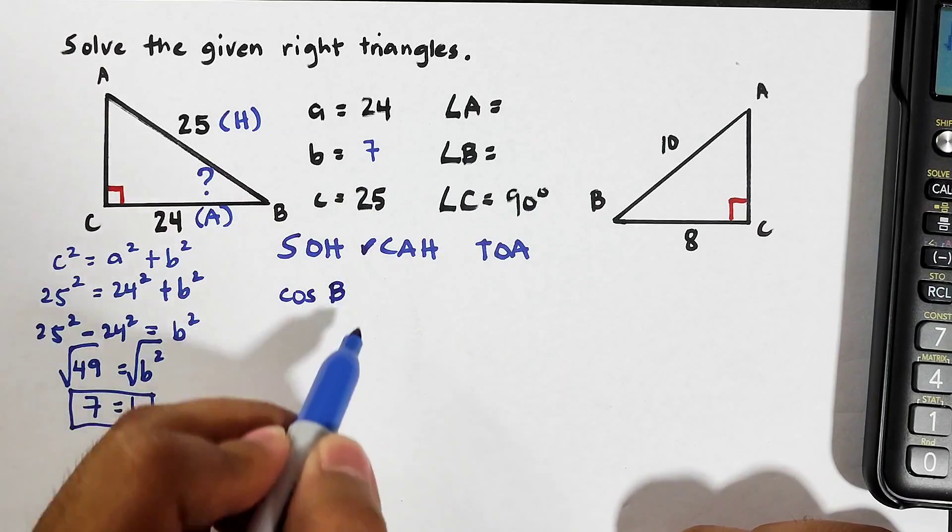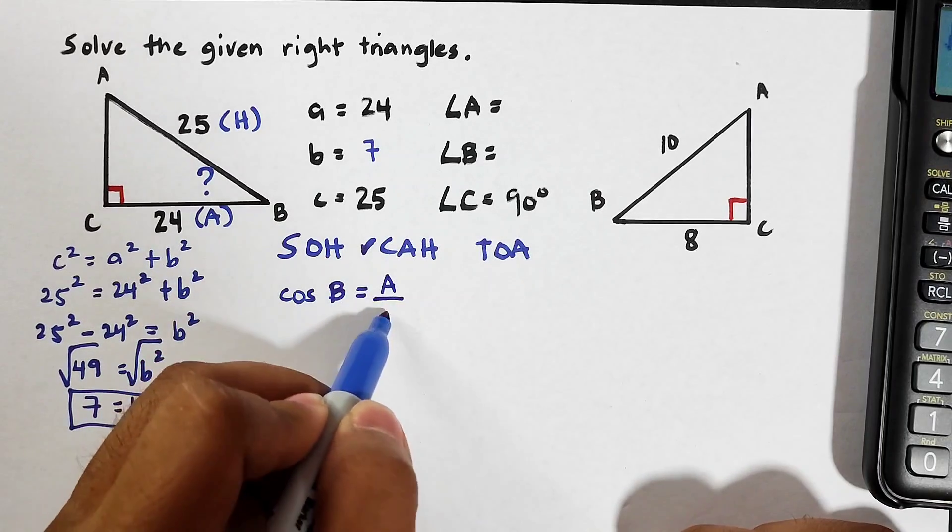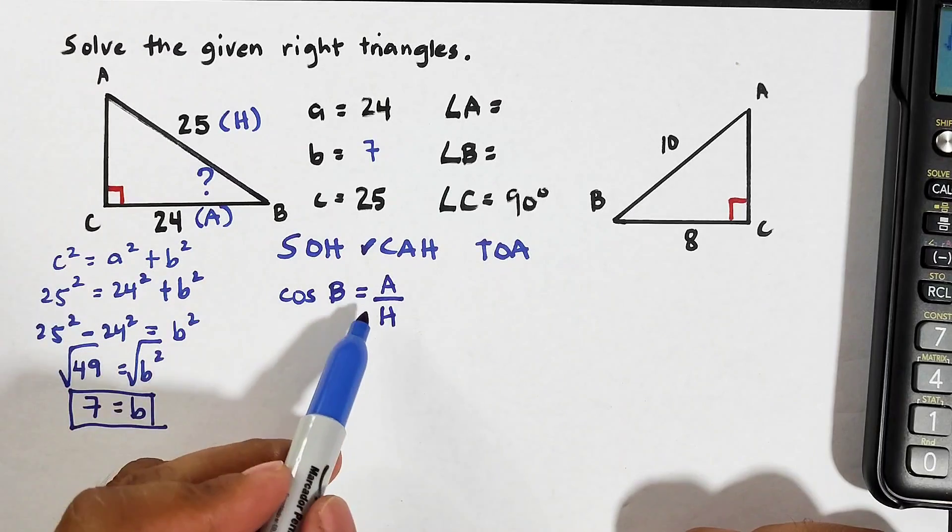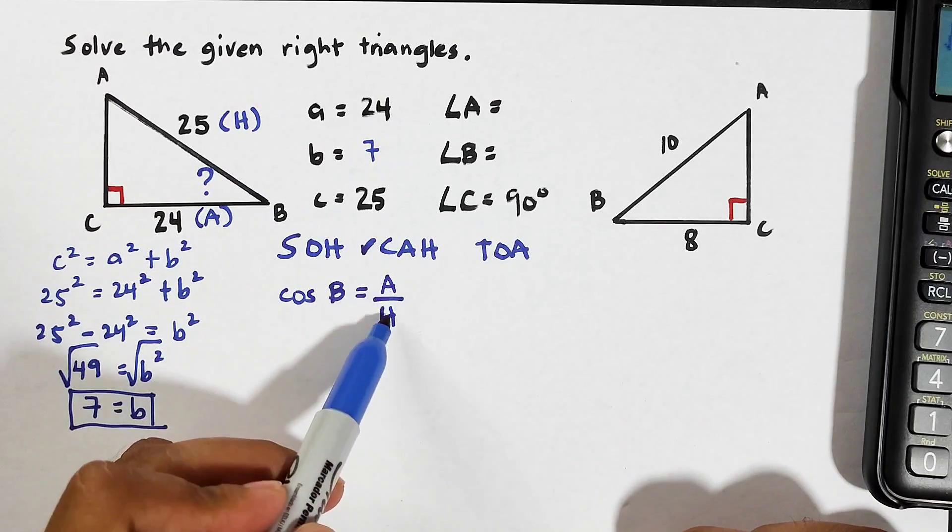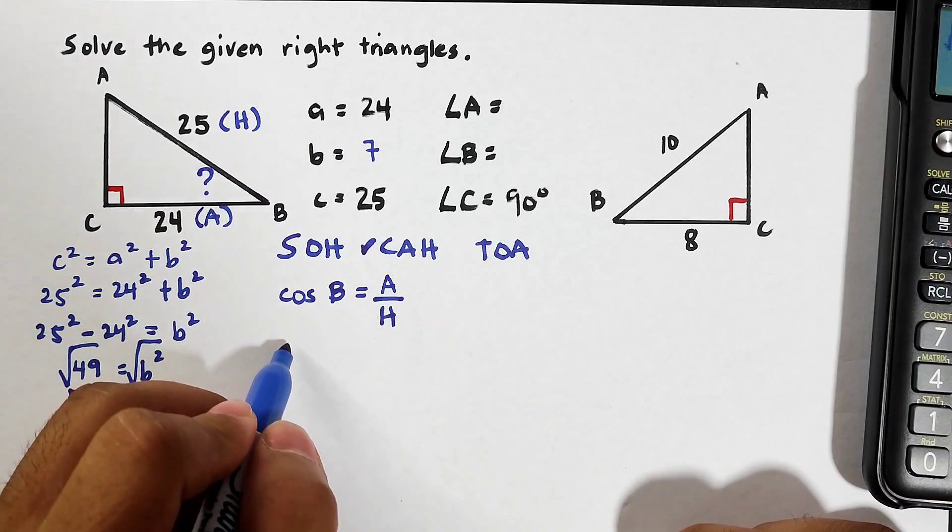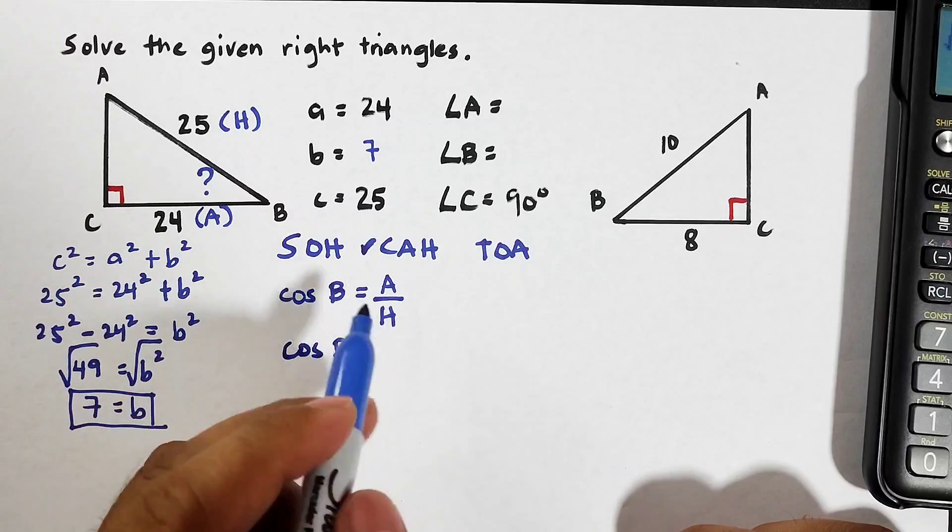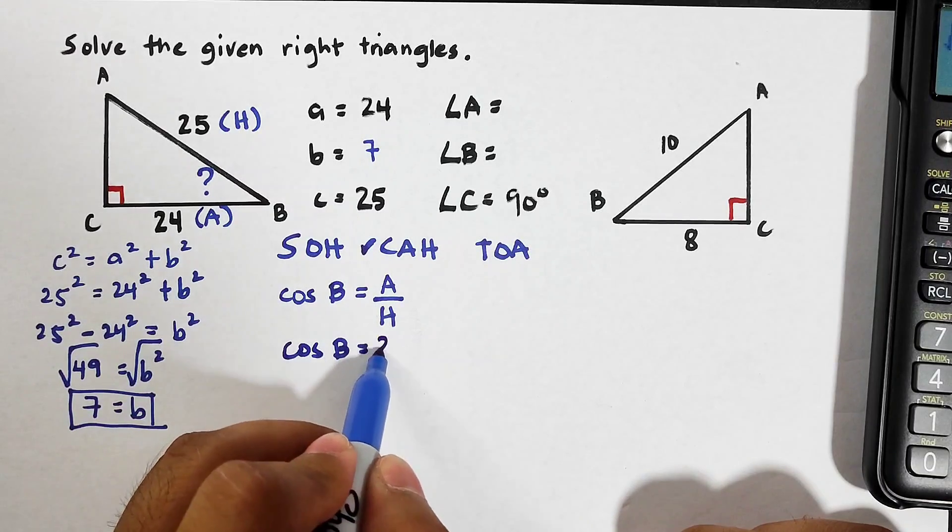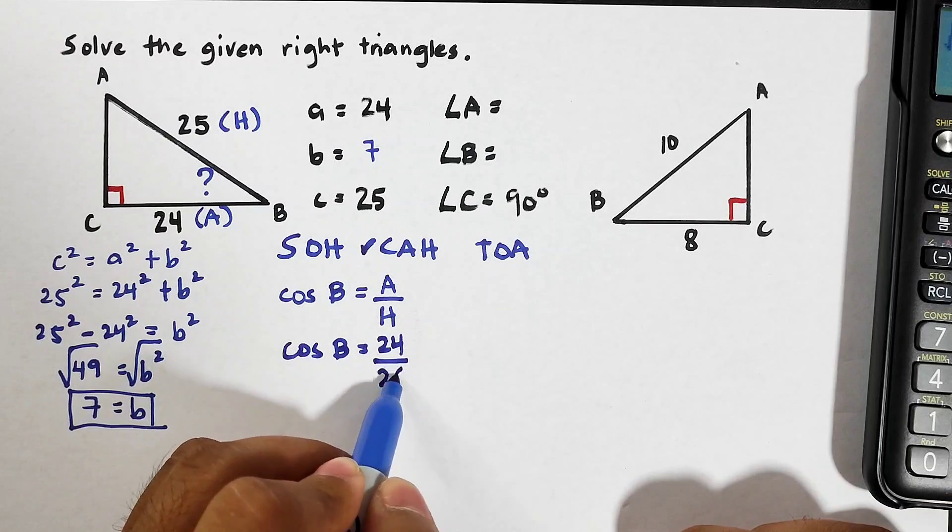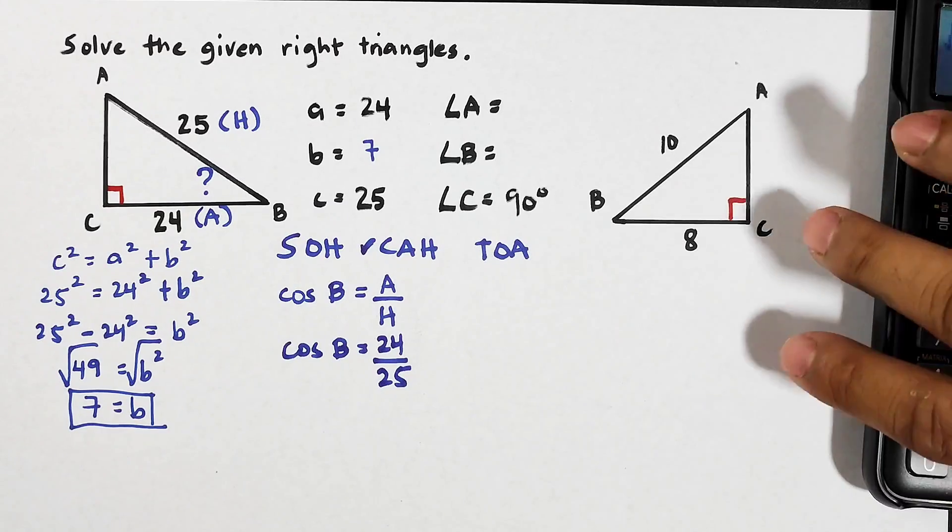Cosine angle B is equal to the adjacent side over the hypotenuse. Next step, substitute the values that we already have from this right triangle. This is cosine B is equal to 24, which is the adjacent side, over the hypotenuse which is 25.